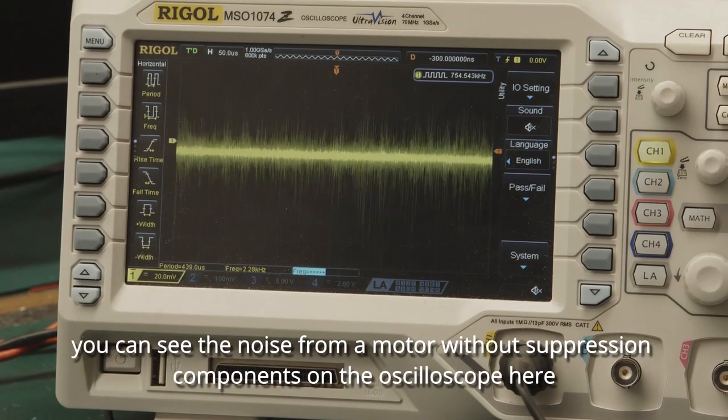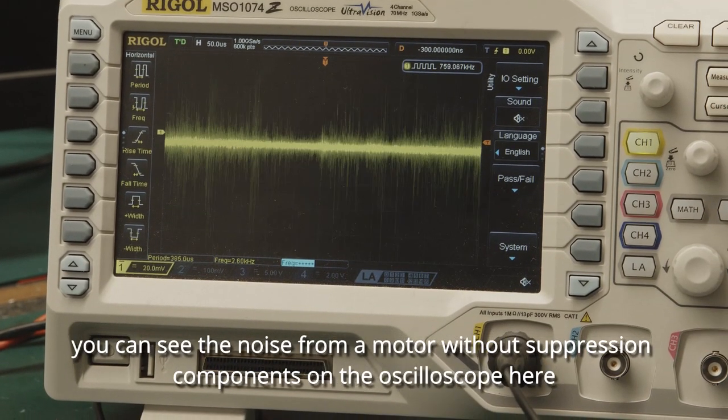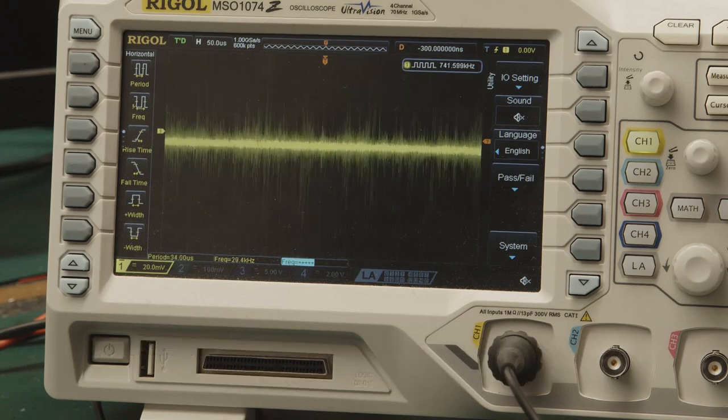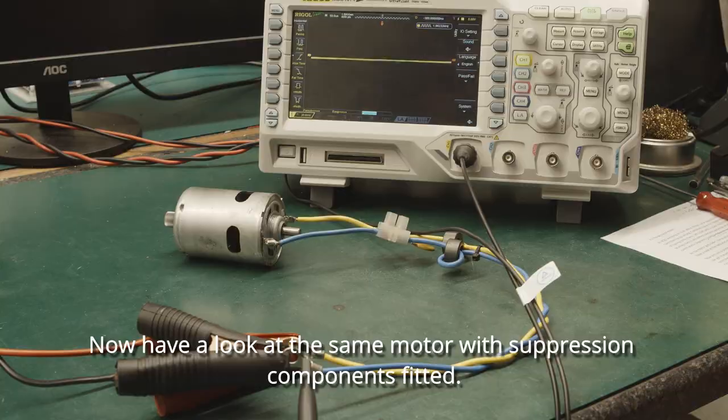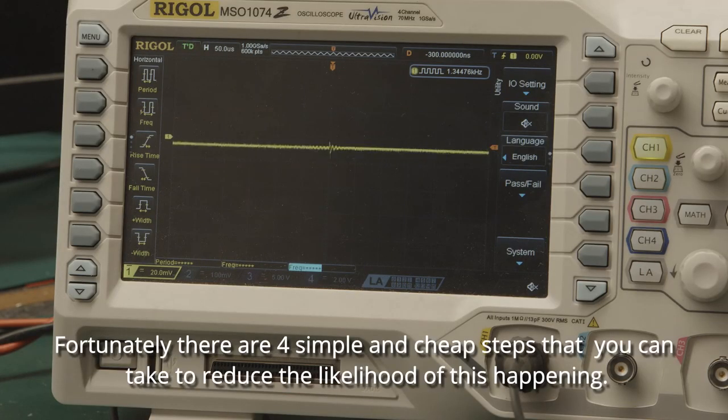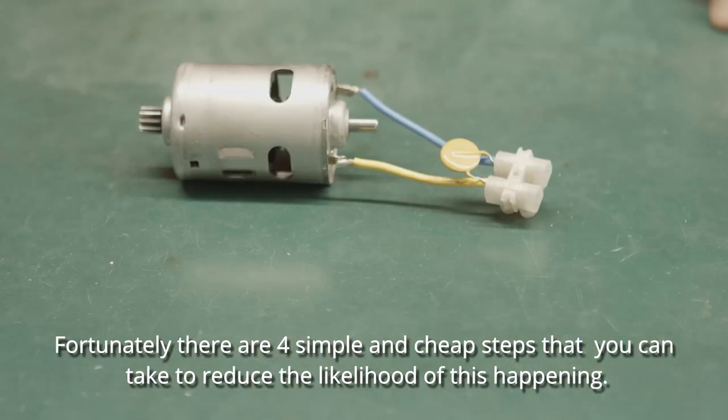You can see the noise from a motor without suppression components on the oscilloscope here. Now have a look at the same motor with suppression components fitted. Fortunately there are four simple and cheap steps that you can take to reduce the likelihood of this happening.